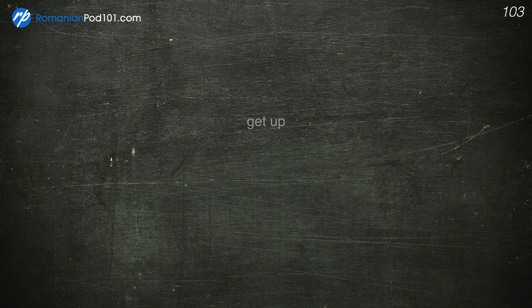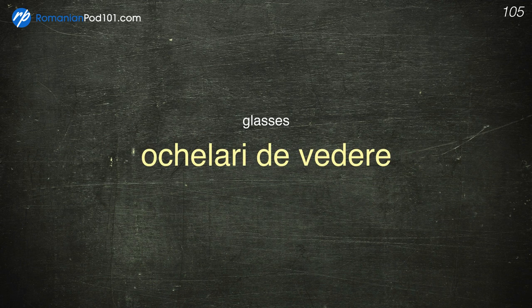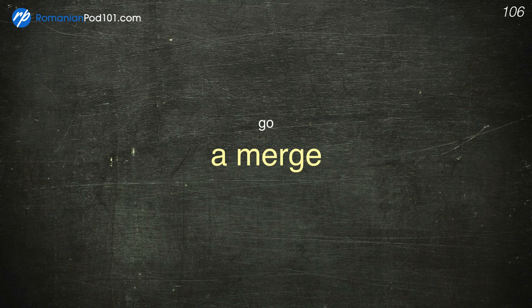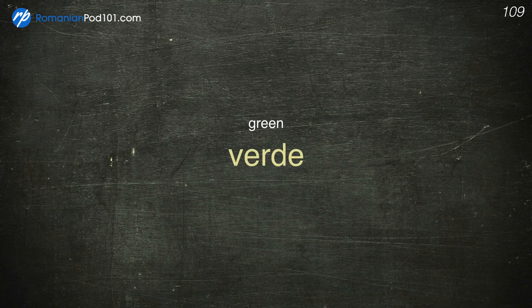Get up — A se scula. Girlfriend — Iubită. Glasses — Ochelari de vedere. Go — A merge. Goat — Capră. Gray — Gri. Green — Verde.